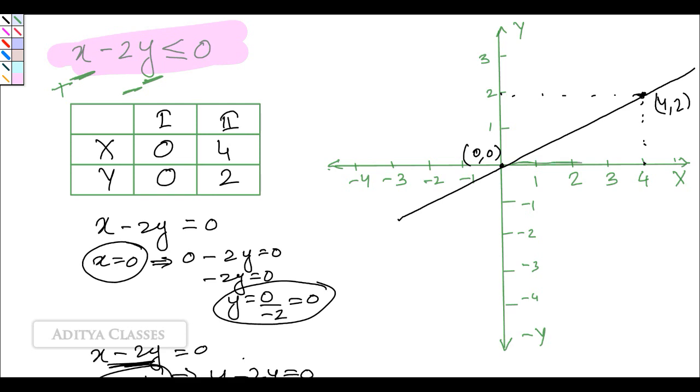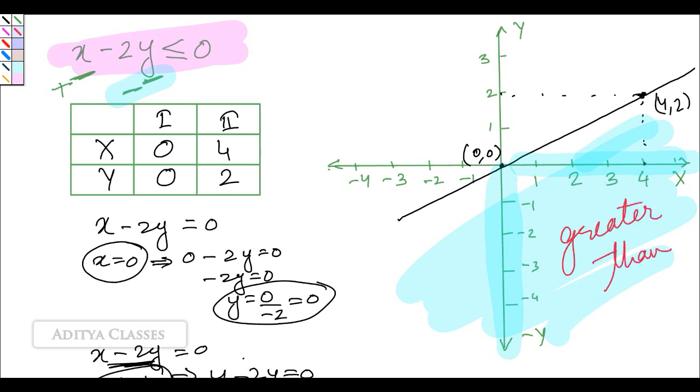Now come to this figure. Where is x positive? This is x positive. Then I need to check y negative. Where is y negative? Here we have y negative.